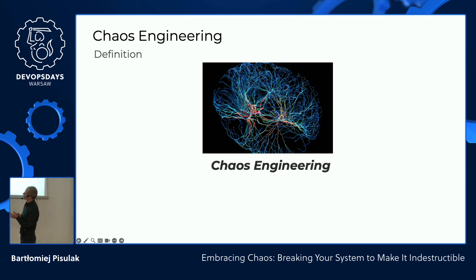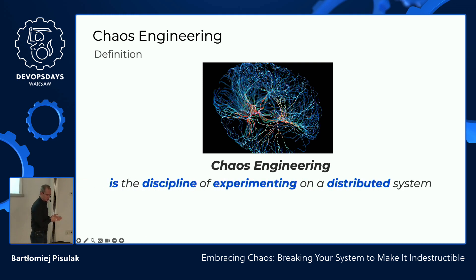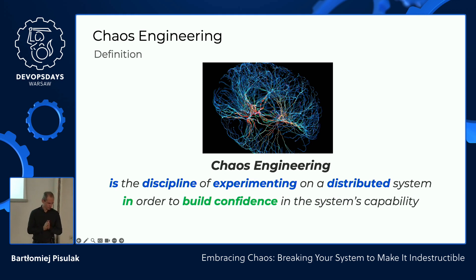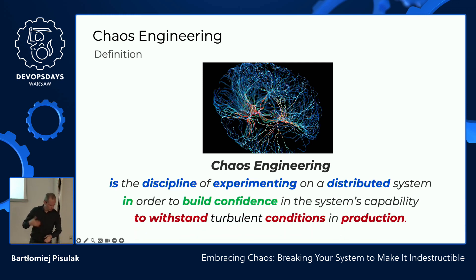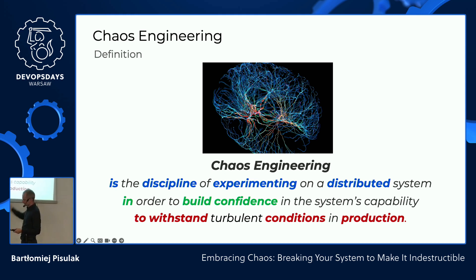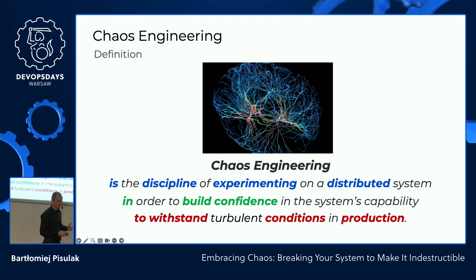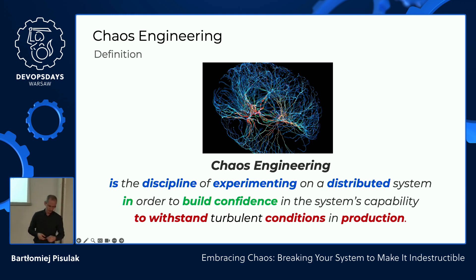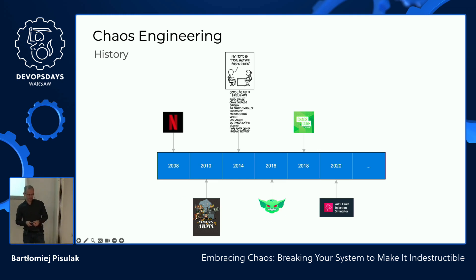Chaos engineering — a definition. Chaos engineering is the discipline of experimenting on a distributed system in order to build confidence in the system's capability to withstand turbulent conditions in production. In short: you take your system, you introduce chaos, you introduce failure, and you observe how your system behaves. That's how chaos engineering works. You want to have your system resilient and prepared for unexpected things.